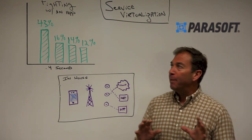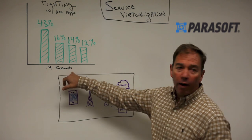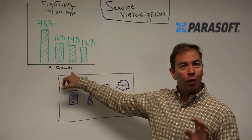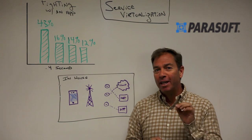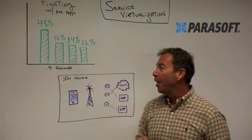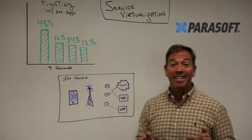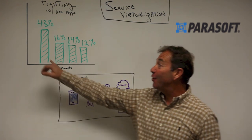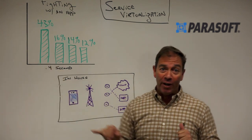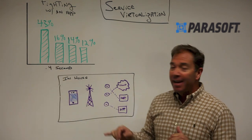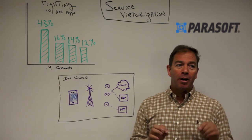So what happens when your app starts to stutter or doesn't quite do what a user expects it to do? Within 0.4 seconds, 43% of people will abandon the transaction, and 16% of people will go to a competitor.